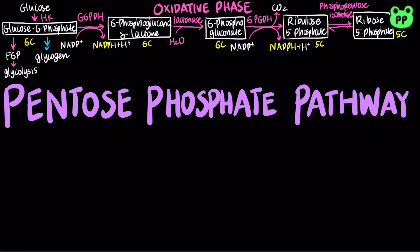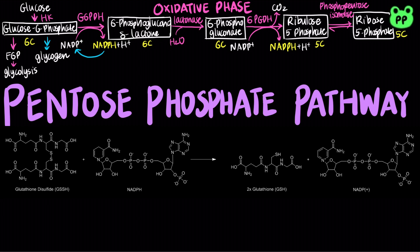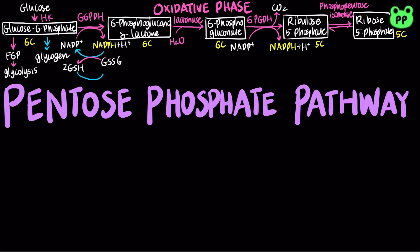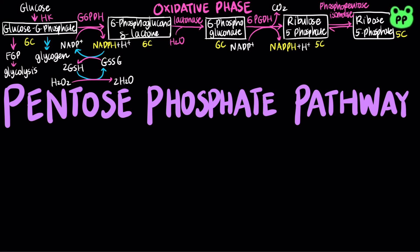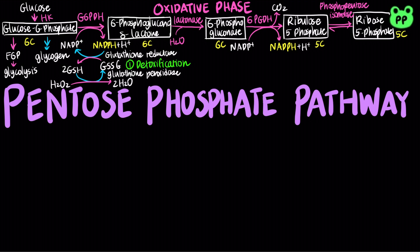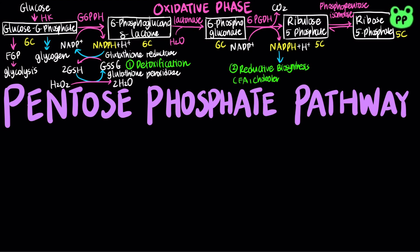NADPH serves two important functions in our body. It can protect our cells against highly reactive oxygen derivatives. The oxidation of NADPH can be coupled to the reduction of glutathione by the enzyme glutathione reductase. Then, the oxidation of glutathione can be coupled to the reduction of hydrogen peroxide, which is a reactive oxygen species, to water by the enzyme glutathione peroxidase. The oxidation of NADPH also plays an important role in the reductive biosynthesis of fatty acids, cholesterol, and steroid hormones.